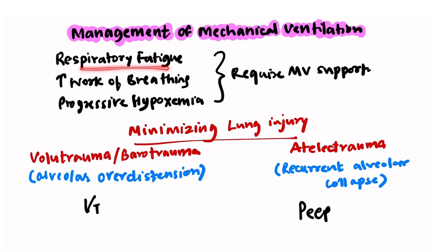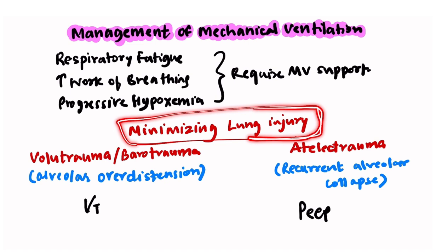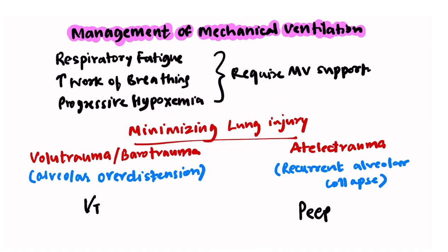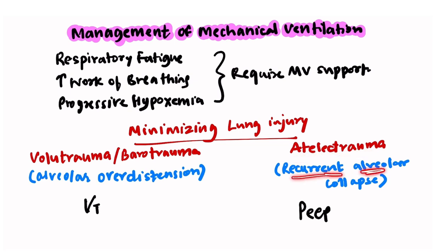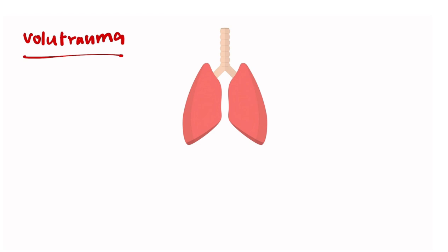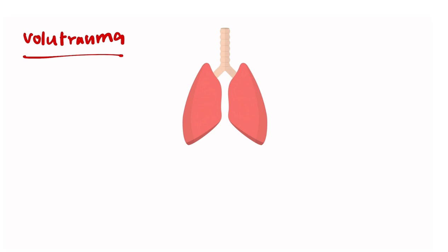Patients with respiratory fatigue, increased work of breathing, and progressive hypoxemia may require mechanical ventilatory support. The prime goal when initiating mechanical ventilation is to minimize lung injury. There are two types of ventilator-induced lung injury: volutrauma or barotrauma, caused by alveolar overdistension and dependent on tidal volume; and atelectrauma, caused by recurrent alveolar collapse and dependent on PEEP.